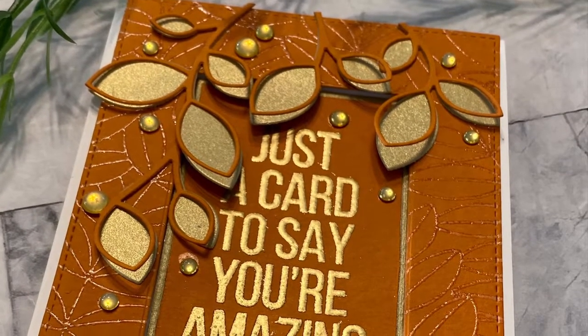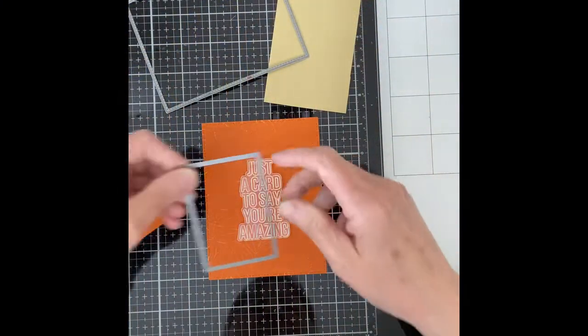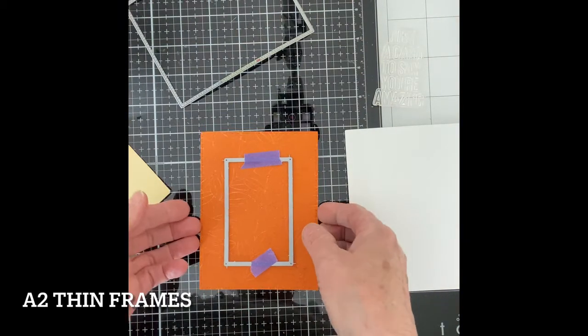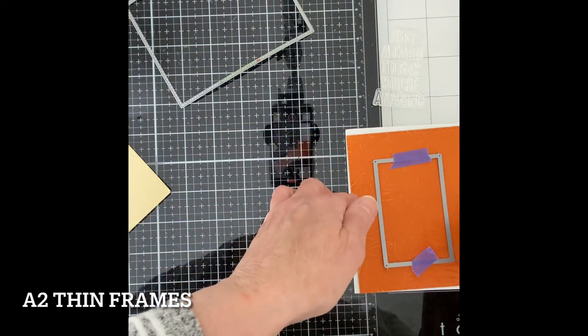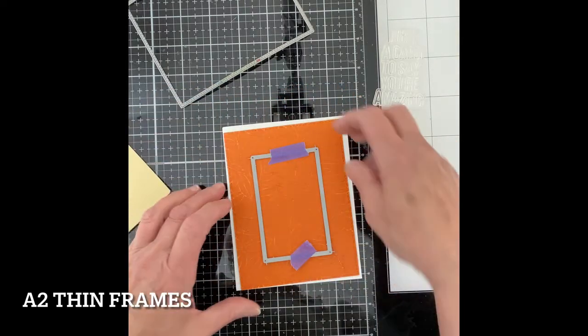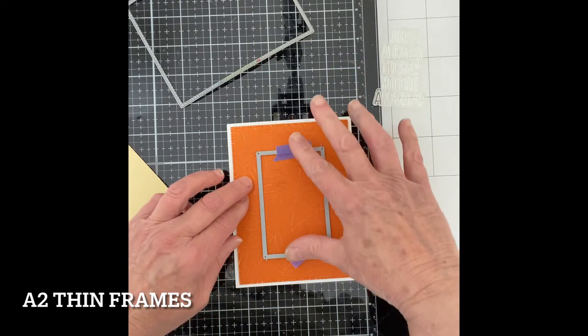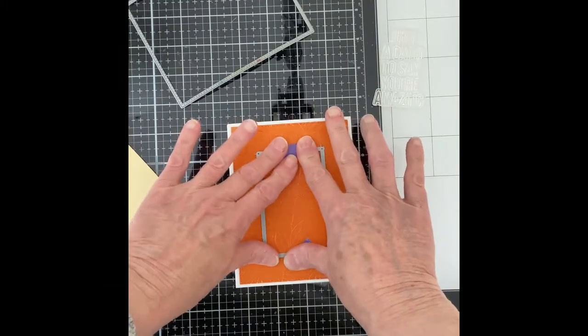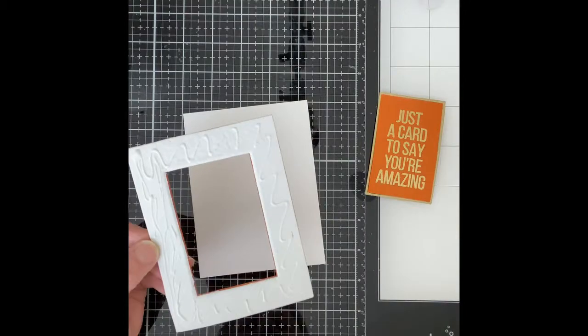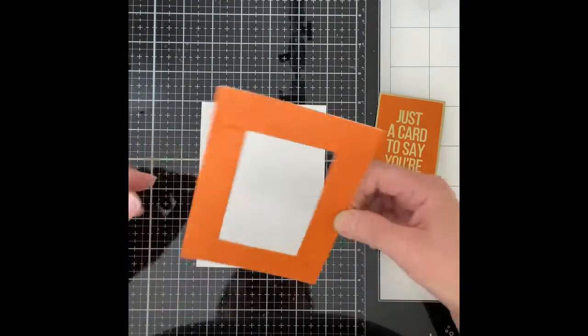I began this card by die-cutting the embossed panel with a stitched rectangle from My Favorite Things Stacks 2. The fourth smallest frame die in Simon Says Stamps A2 thin frames fit nicely around the sentiment that I wanted to use. I die-cut the center of the embossed panel and also a piece of oversized foam. The frame of the embossed panel was attached to the foam and trimmed down. The dimensional frame was then adhered to an A2 size card base.